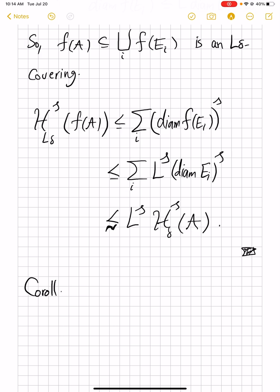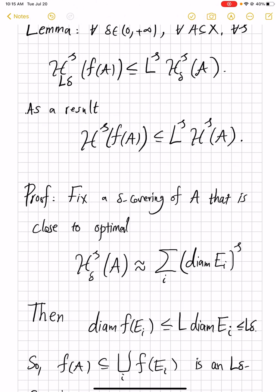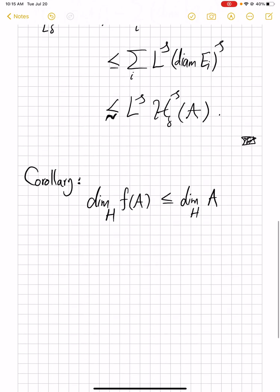So what is the corollary? The corollary is that the Hausdorff dimension of f(A) will never increase. It's less than or equal to the Hausdorff dimension of the set you started with. Of course, it can get less, because f, for example, can be a constant map. And this is by definition, because if H^S is finite, then H^S of f(A) is finite. That means when H^S of A is zero, the other one is zero.